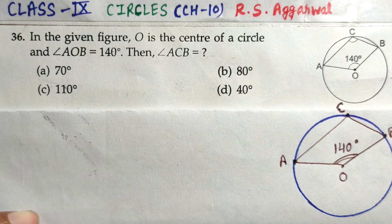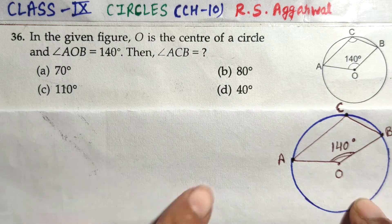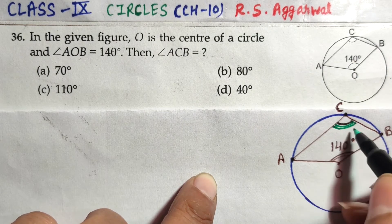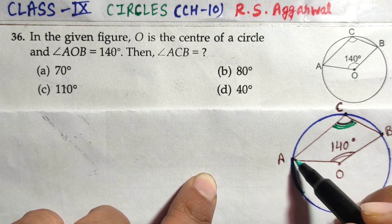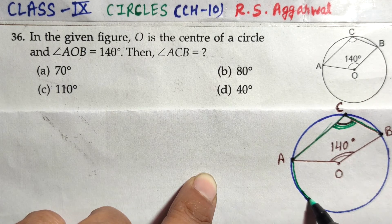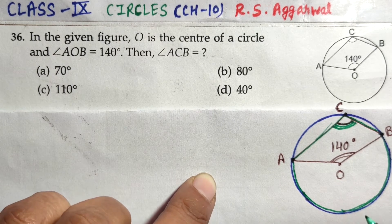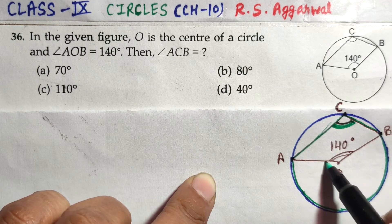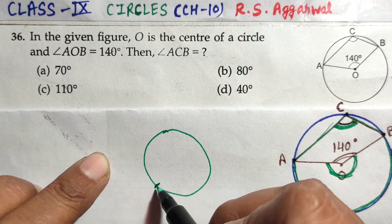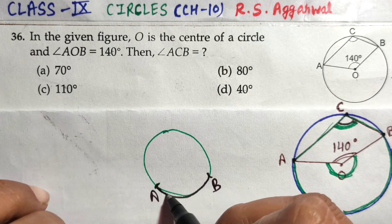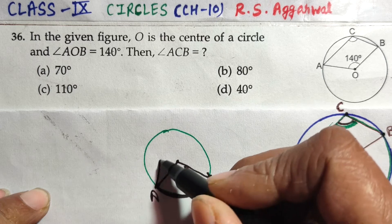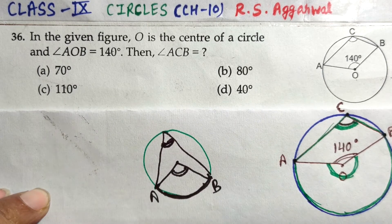The boundary angle we need to find has a specific shape — it's formed downward on the circumference. We can see that one line goes from A to C and another from B to C, so this angle is formed by arc AB. As explained in previous videos, the boundary angle, the center angle, and the arc must all correspond to the same shape — they must all be on the same side.